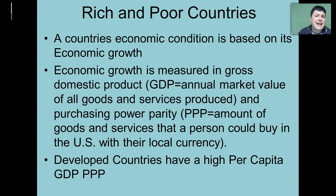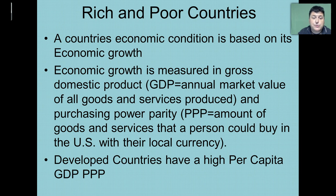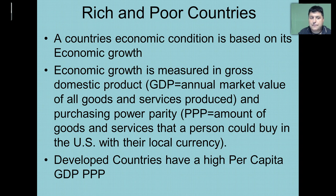Now a country's economic condition is based on its economic growth. Economic growth is measured in GDP per PPP. GDP is the gross domestic product, which is the annual market value of all the goods and services produced in that particular country. And PPP stands for purchasing power parity, which is the amount of goods and services that a person could buy in the United States with local currency. Developed countries have a very high per capita GDP PPP.